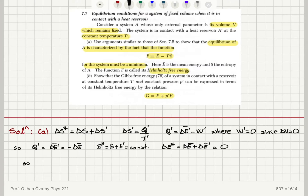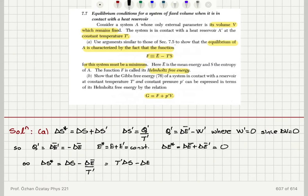So I can write delta S_star, the total entropy change, as delta S plus delta S', which is minus delta E'_bar divided by T'. Since Q' equals delta E' equals minus delta E, this becomes minus delta E divided by T'. So the total entropy change is T' delta S minus delta E_bar, all divided by T'.